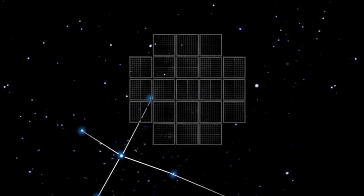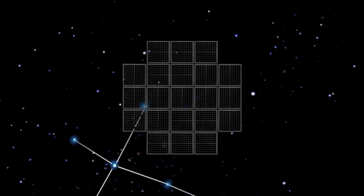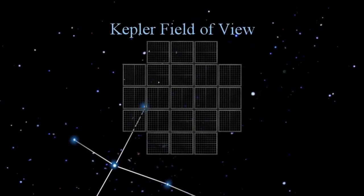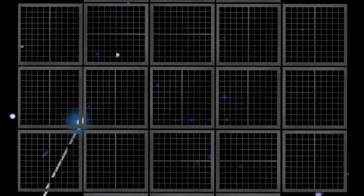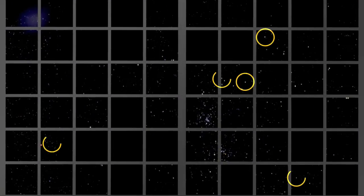By staring at the same spot in the sky for a long time, detailed measurements can be collected of all stars in the region and a record kept of their brightness and any variations that exist over time.